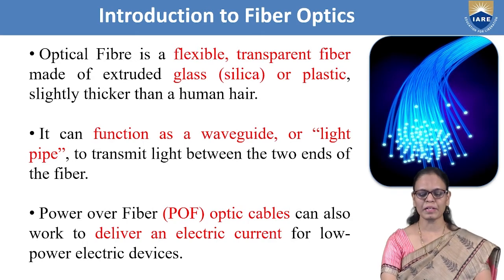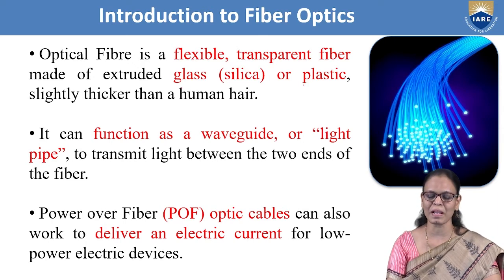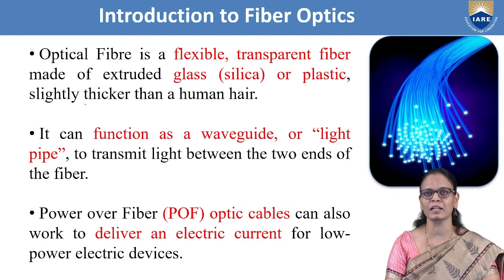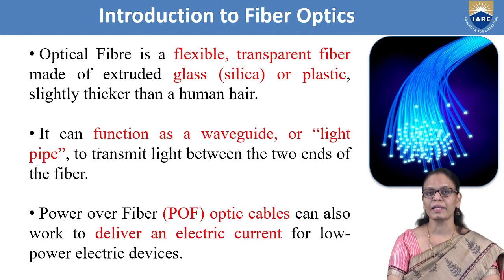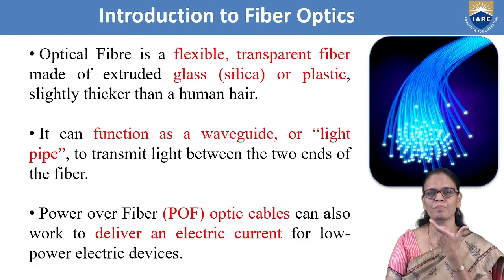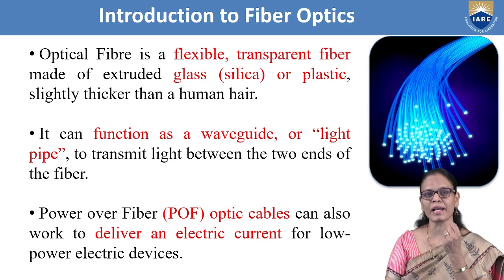Optical fiber is a flexible, transparent fiber made of extruded glass or plastic, which is slightly thicker than a human hair. It can function as a waveguide or light pipe to transmit light between the two ends of the fiber — if light enters from one end, it transmits through the fiber to the other end.